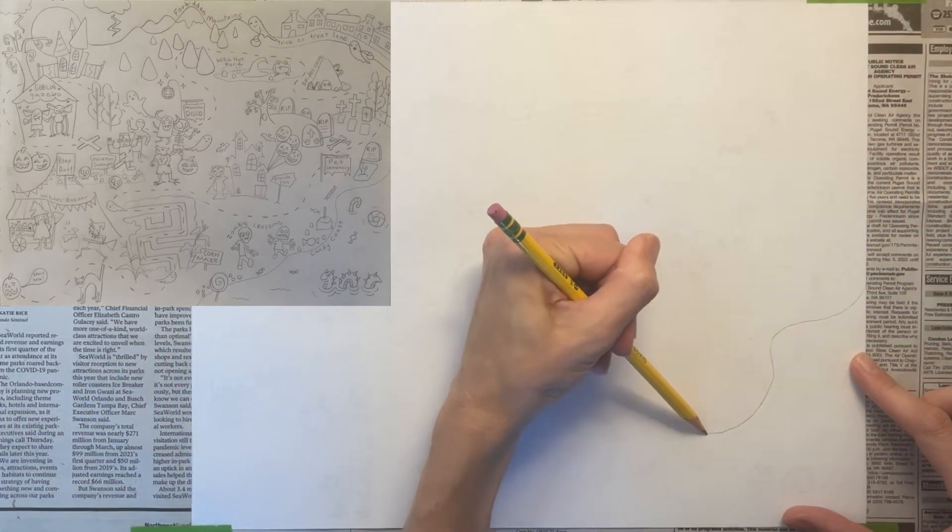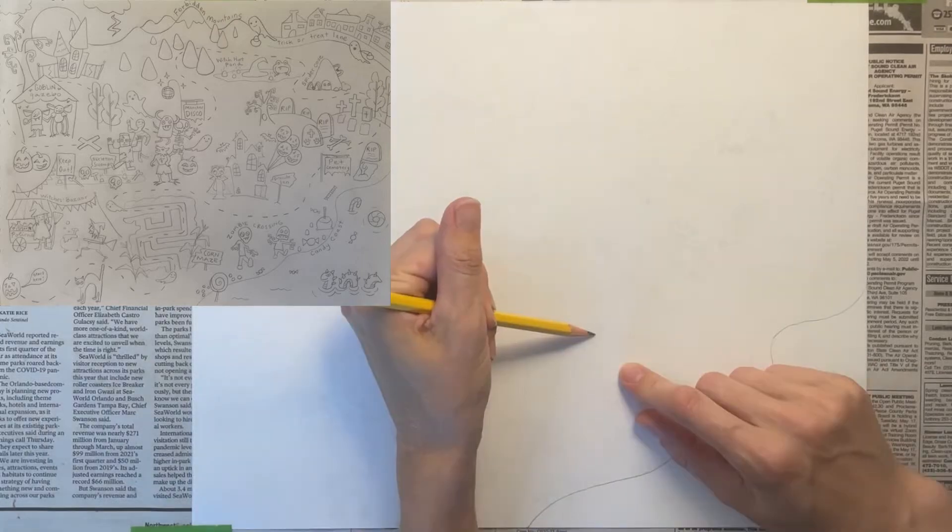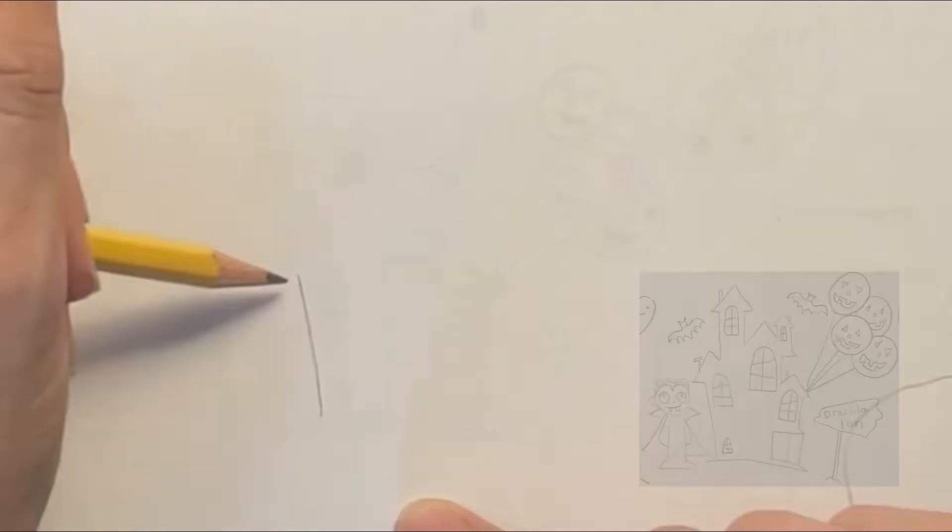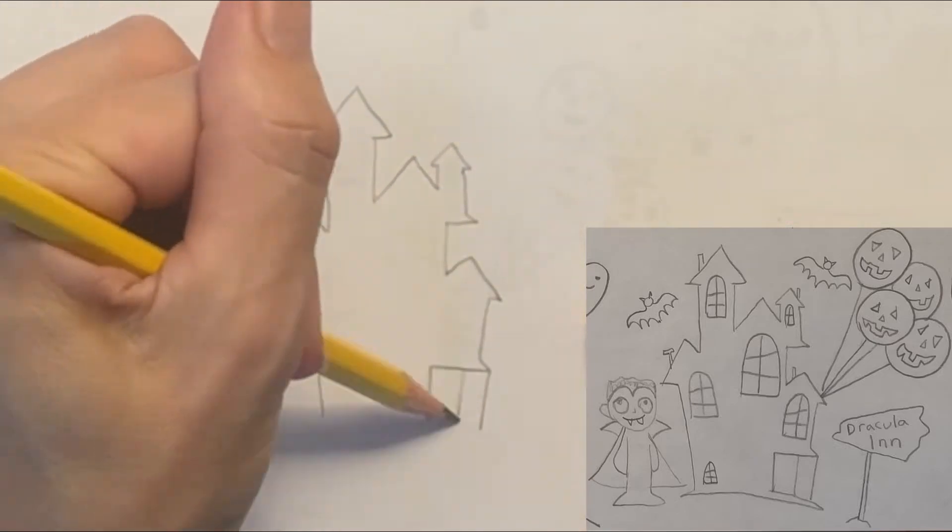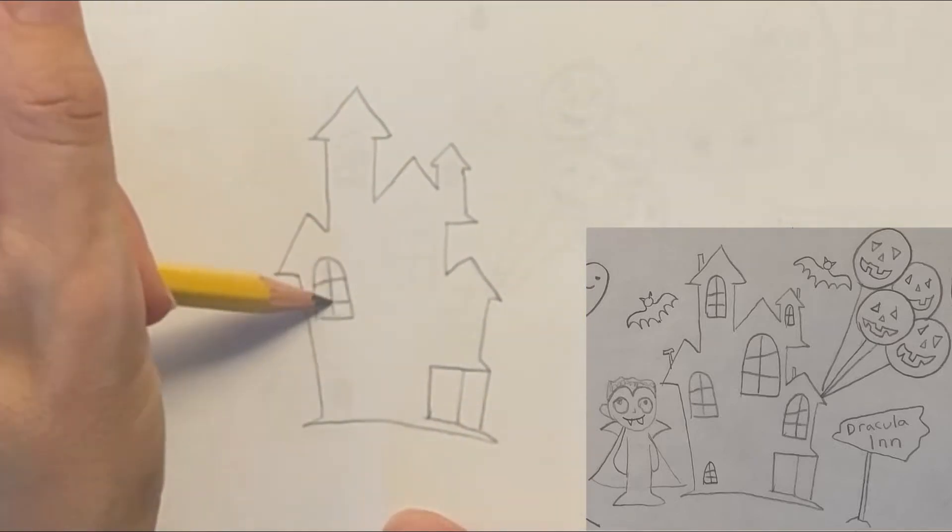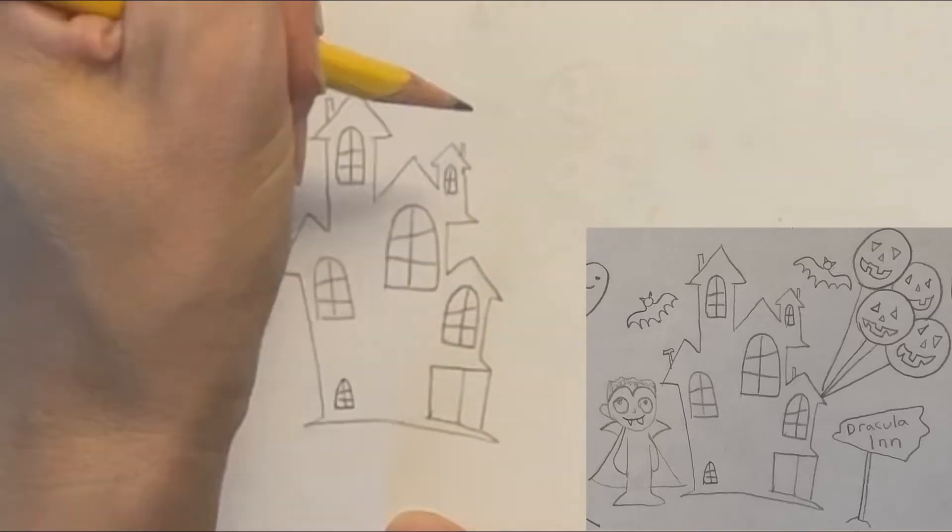Now I'm going to walk you through this step by step. I'm going to add a wavy coastline here. I thought it would be fun to draw a vampire hotel called Dracula Inn, so that's what I'm drawing here. I'm just drawing the outline of the house because I'm going to color it in solid black to make it look extra creepy.